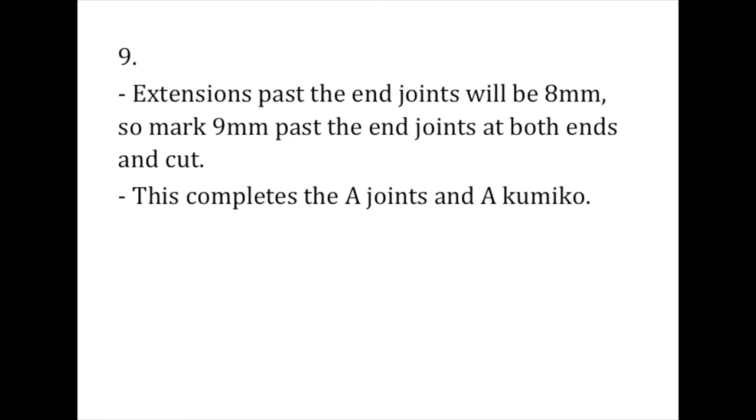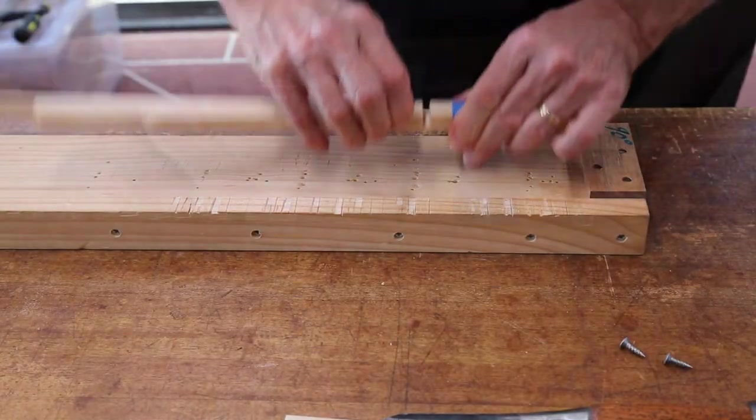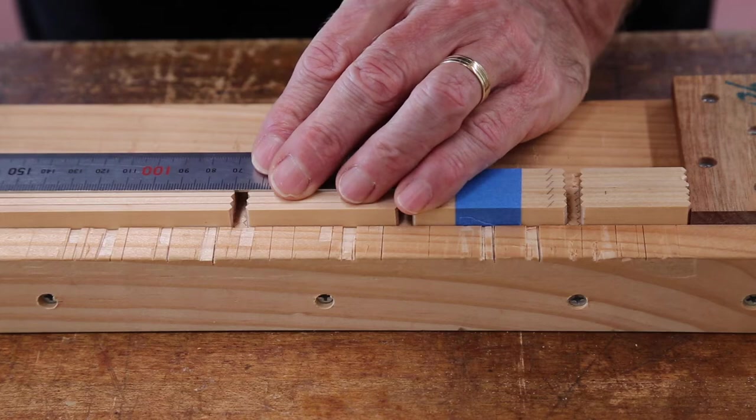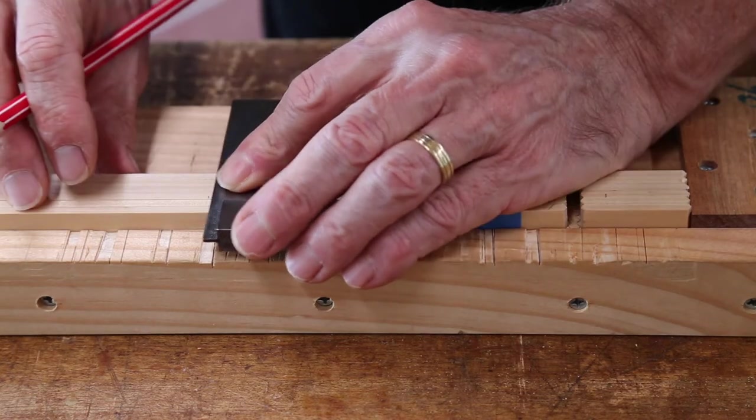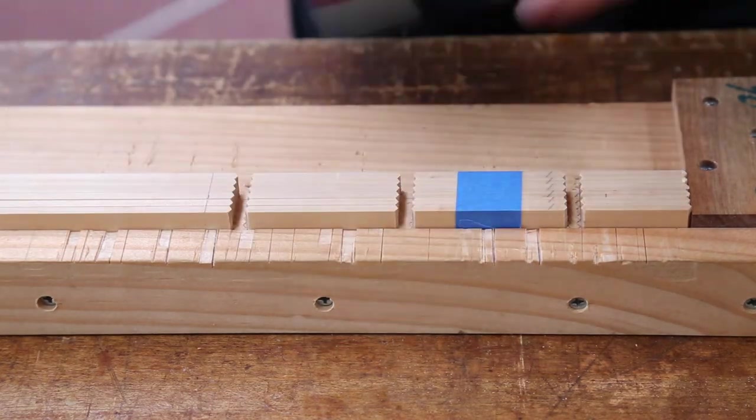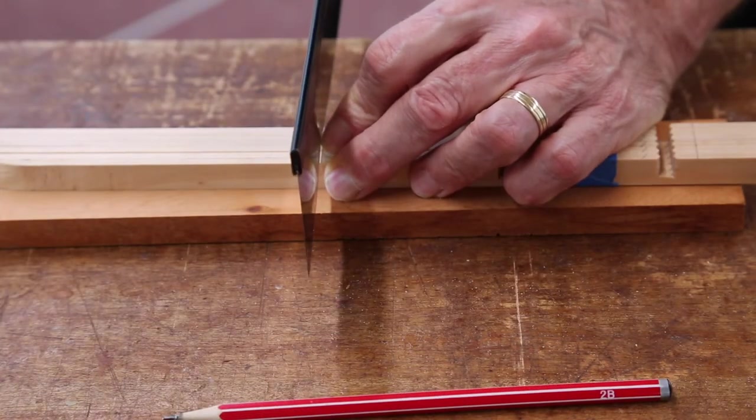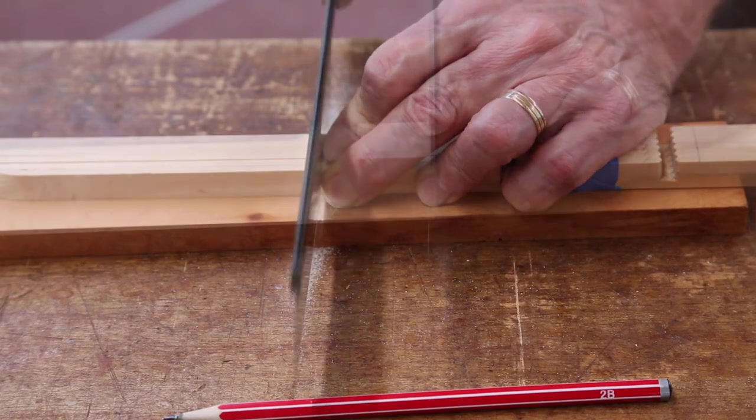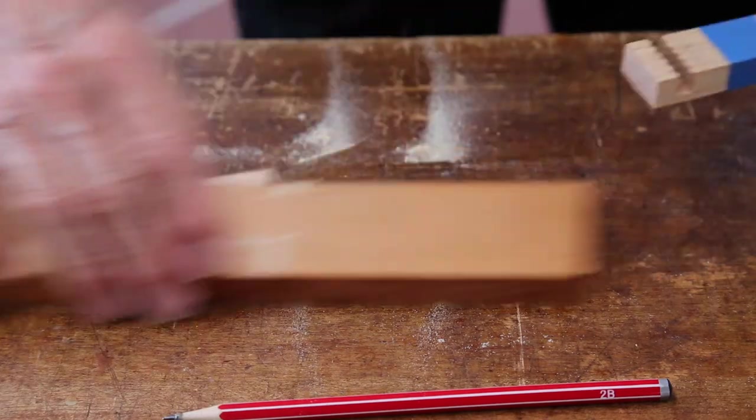The extensions past the end joints will be eight millimetres. So the final step for the A kumiko is to mark nine millimetres past the end joints at both ends and cut. And that completes the A kumiko.